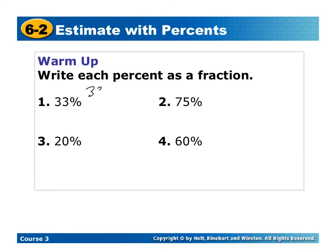So 33%, remember it's 33 out of 100, that can't be reduced. 75% is going to be 75 out of 100, but that would reduce to 3 fourths.